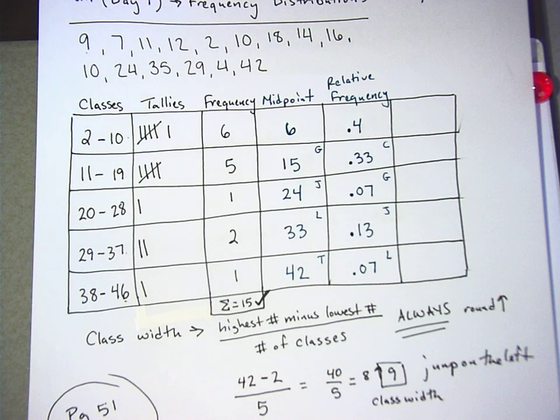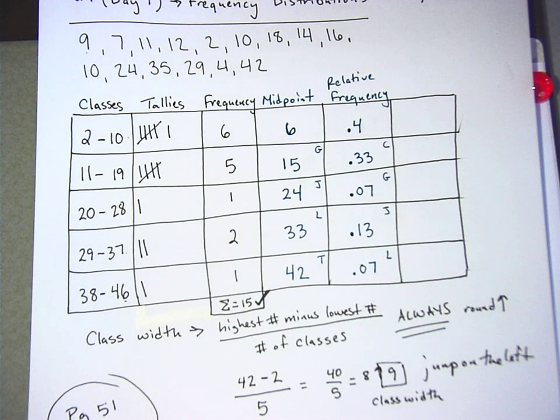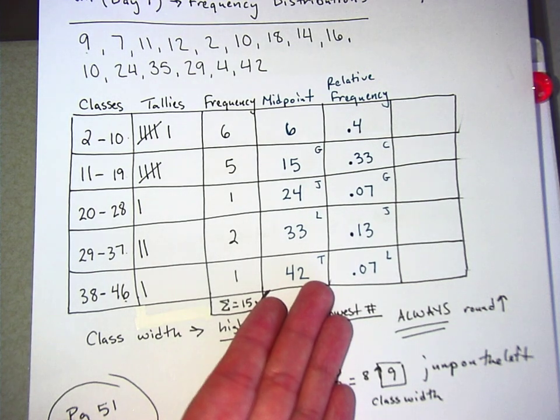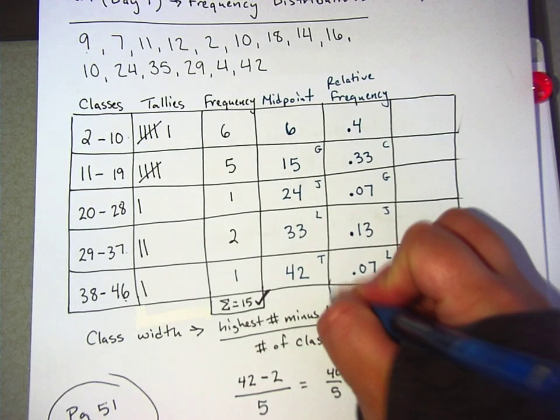All right, now, what would happen if I added all of these up right now? What percent should I get if I added all of them up? 100%. 100%, or I wrote them as decimals, so they should add up to 1. All right, let's try it right now. Add them up.